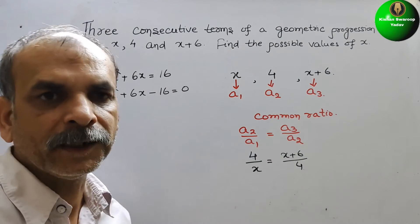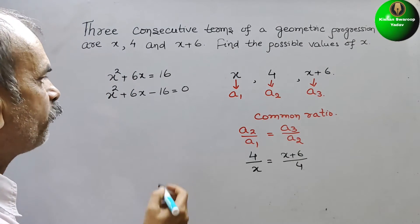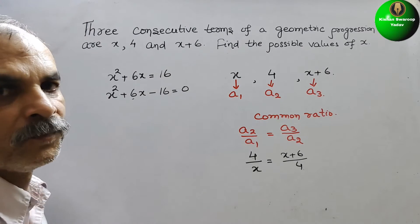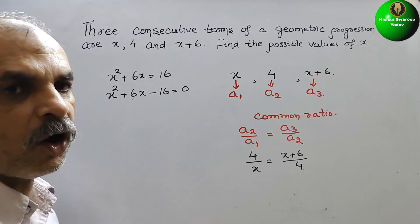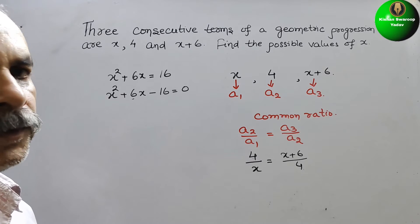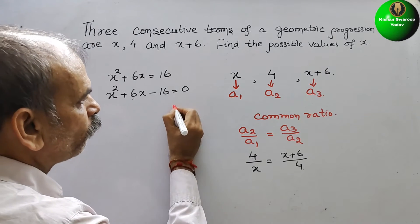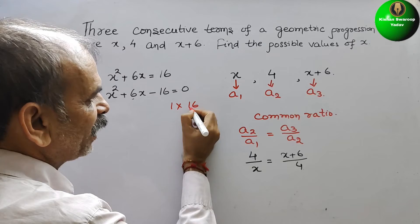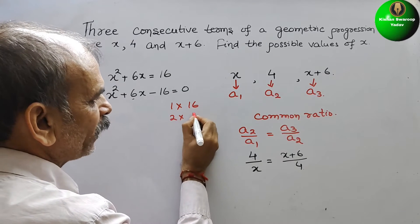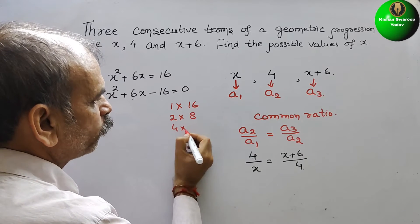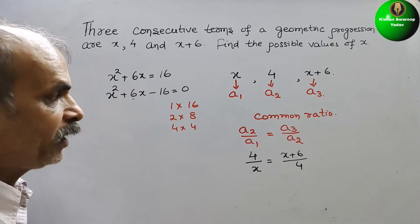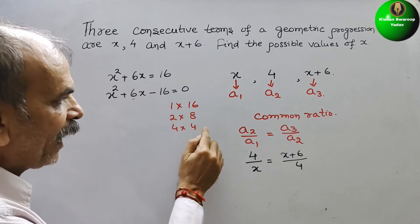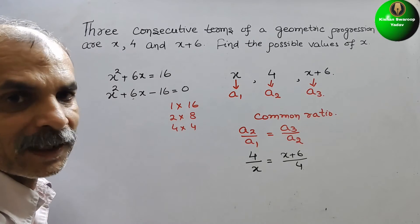Go for middle term splitting. We have to make it 6. That means we have to find the factors of 16. So it will be 1 times 16, second is 2 times 8, third is 4 times 4. You can see by adding and subtraction we will get 6. That means by the second one.